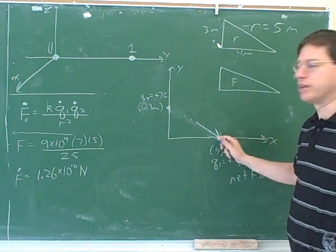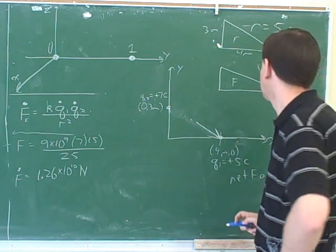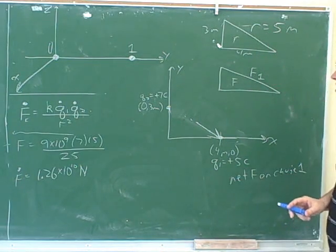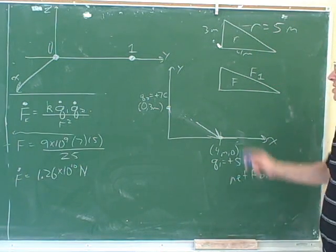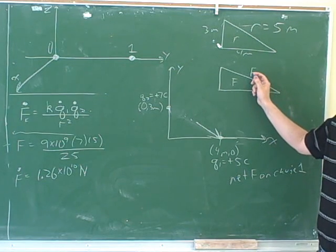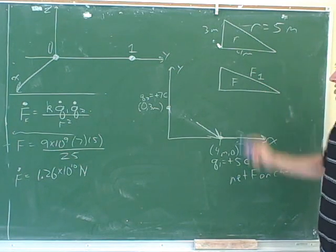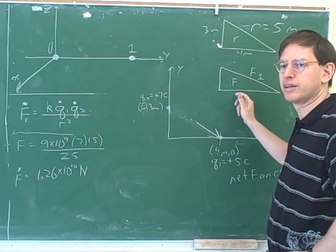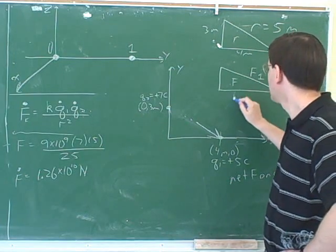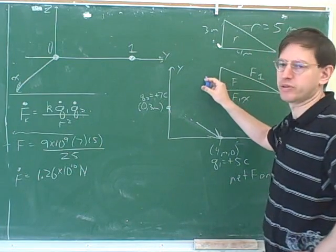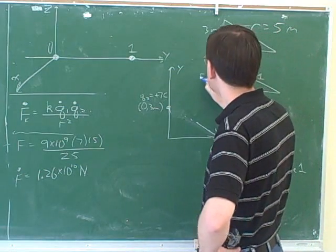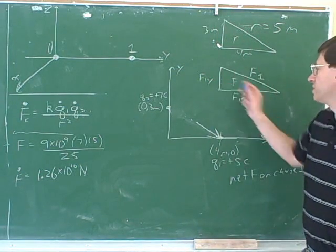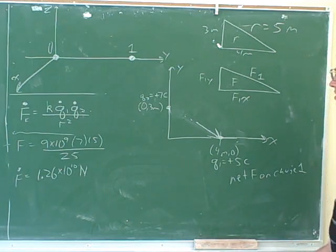Let's keep focusing on the force on charge one. Remember that the hypotenuse always represents the overall vector, so this would represent the overall force on charge one. A good symbol for one leg would be F1x, and the other leg would be F1y. This is what we're going to use to break these vectors into components.